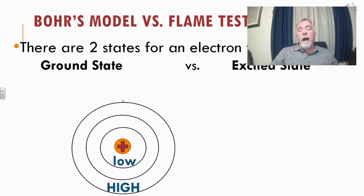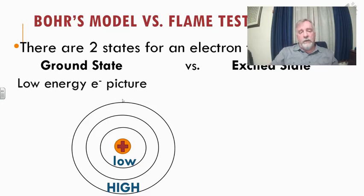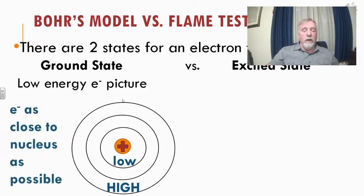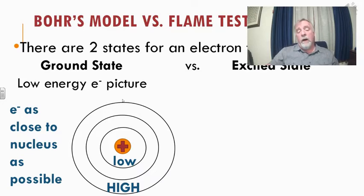An electron can be in a ground state or an excited state. The ground state is the lowest energy for that electron. Think of it like being at ground level — if you drop something from the first row of bleachers or the top row, the ground state is when something's at the ground, it can't go any further down. When our electron is at its lowest energy, it's as close to the nucleus as it can get.